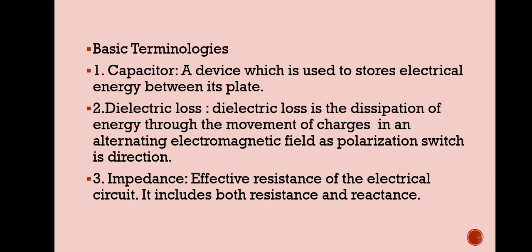Now, first of all, we have some basic terminologies. First thing is capacitor. Capacitor is a device which stores electrical energy between its plates. Second thing is dielectric loss. Dielectric loss is the dissipation of energy through the movement of charges in an alternating electromagnetic field as polarization switches its direction. Third thing is impedance. Impedance is the effective resistance of the electrical circuit. It includes resistance and reactance.